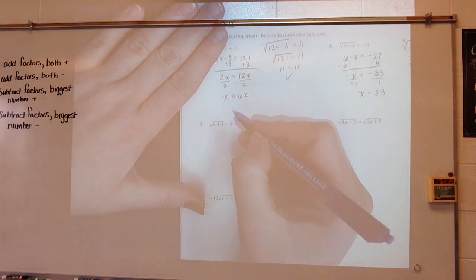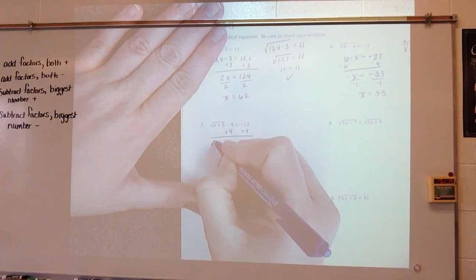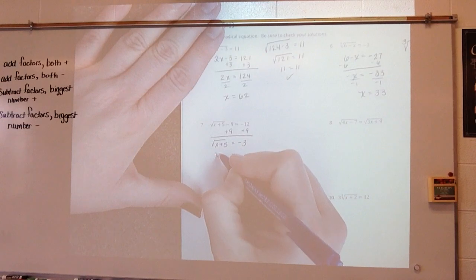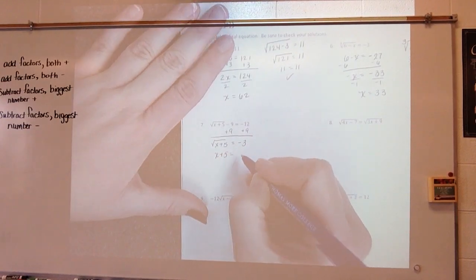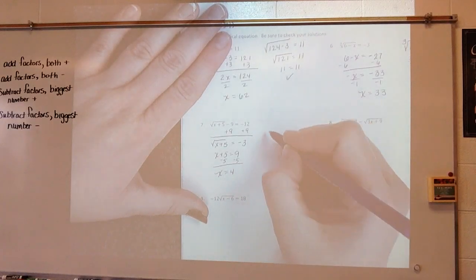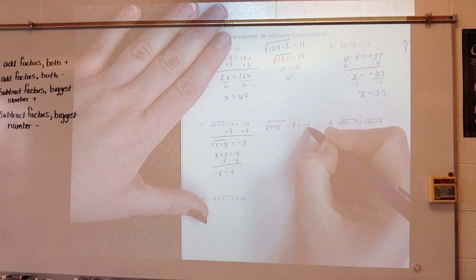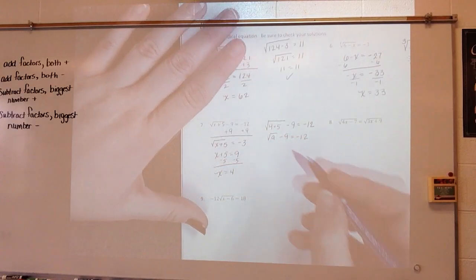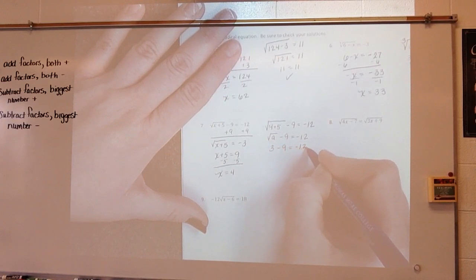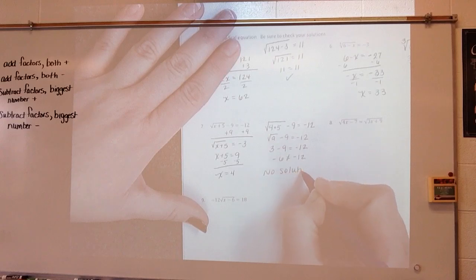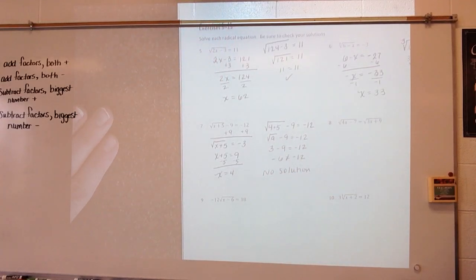Look at this one — I add 9 to get the square root of x plus 5 equals negative 3. Square everything: x plus 5 equals negative 3 times negative 3 equals 9. Subtract 5: x equals 4. Checking: square root of 4 plus 5 minus 9 equals negative 12. Square root of 9 is 3, minus 9 equals negative 6. Negative 6 does not equal negative 12, so there is no solution. It's an extraneous situation.